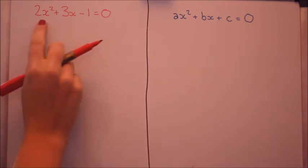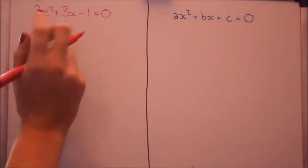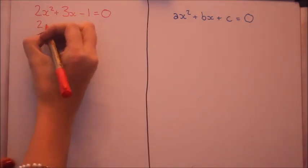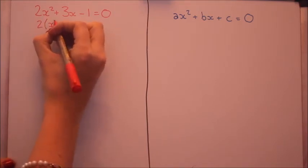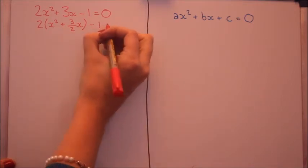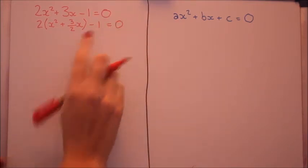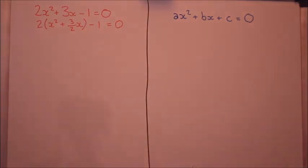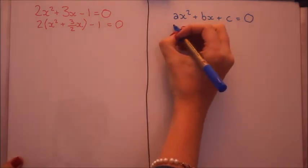The first thing to do is take the 2 that's in front of the x squared out as a common factor from these two terms. Remember you don't need to take it out of the third term, that can just stay. Let's do the same thing over here and take a out as a common factor.